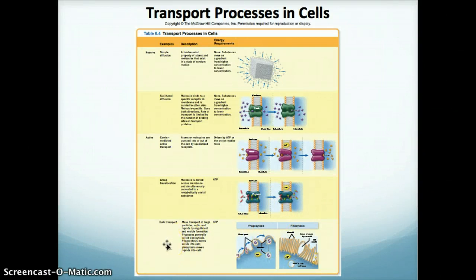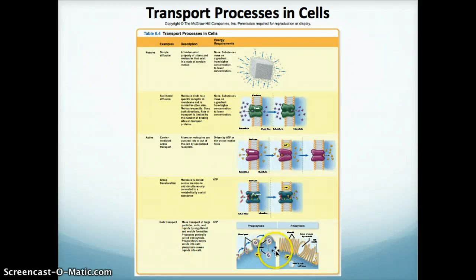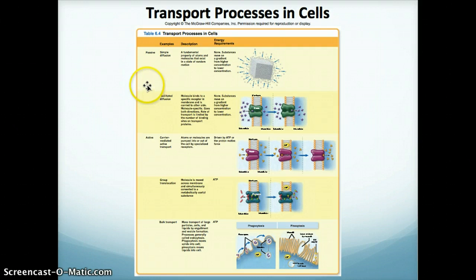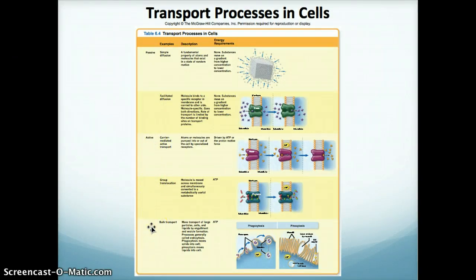The last mechanism is bulk transport, which involves either phagocytosis or pinocytosis. Phagocytosis refers to actual particles being engulfed by the cell, while pinocytosis refers to liquids being moved into the cell. Both require ATP. To summarize: the top two mechanisms — simple diffusion and facilitated diffusion — are passive and don't require ATP; they move with the concentration gradient. The last three — carrier-mediated active transport, group translocation, and bulk transport — are active, require ATP, and often move solutes from less concentrated to more concentrated areas.